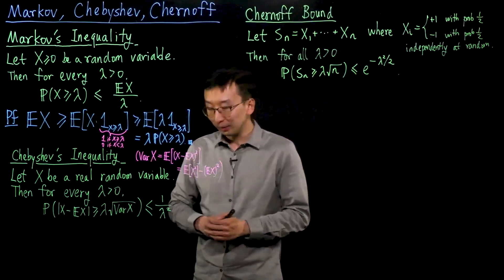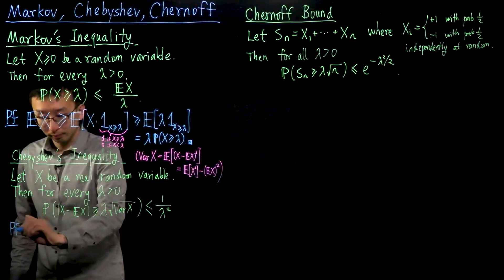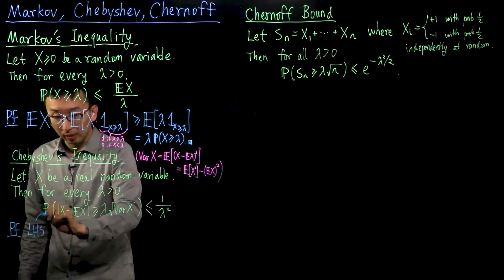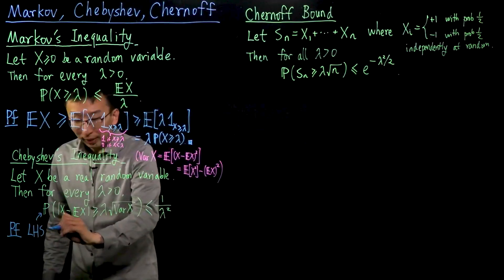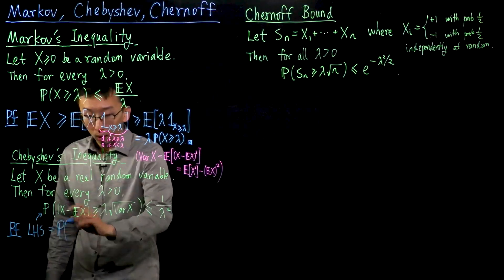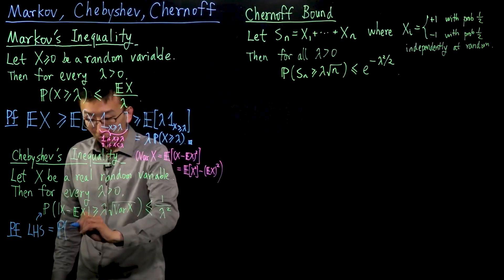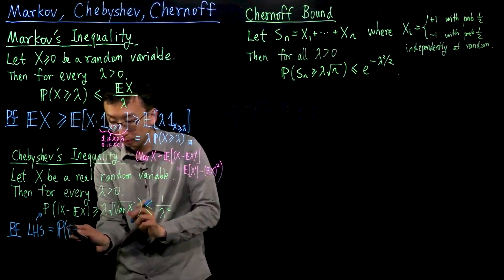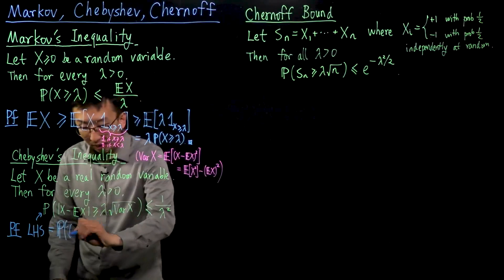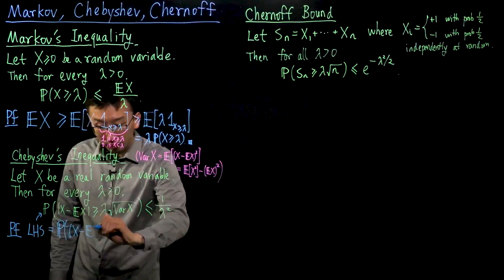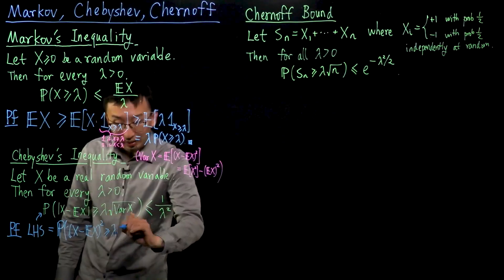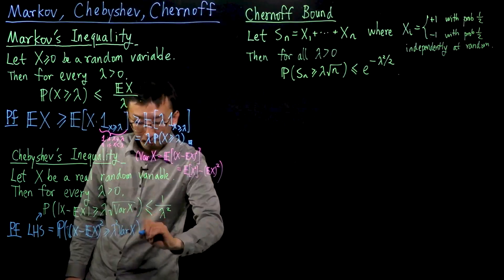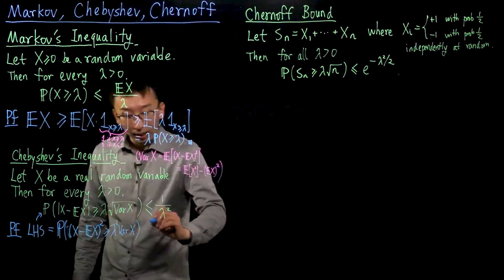Let's now prove this inequality. The left-hand side — namely this probability — we can rewrite it by squaring the inequality in the expression, which gives us on the left-hand side x minus the expectation of x squared, and on the right-hand side lambda squared times the variance of x. And now let us apply Markov's inequality.